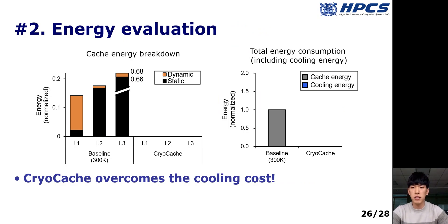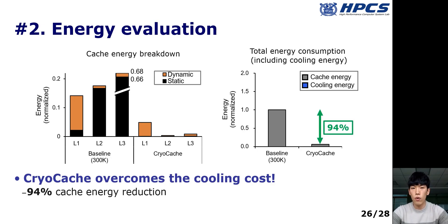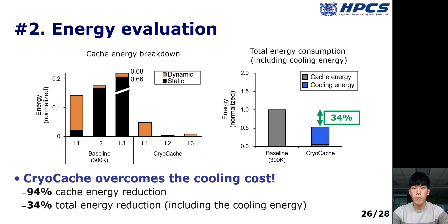Next, let me show the energy consumption result. The left graph shows the cache energy breakdown, and the right graph shows the total energy consumption including cooling energy. CryoCache greatly reduces L1 dynamic energy thanks to voltage scaling, and at the same time greatly reduces L2 and L3 static energy thanks to low temperature and the 3T-DRAM-based cache design. Therefore, CryoCache reduces cache energy by 94% and total energy consumption by 34%, even including the cooling cost.